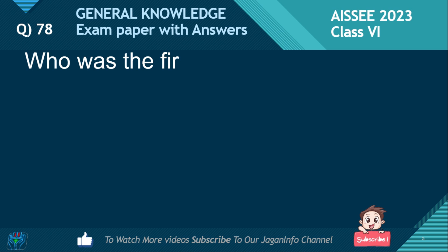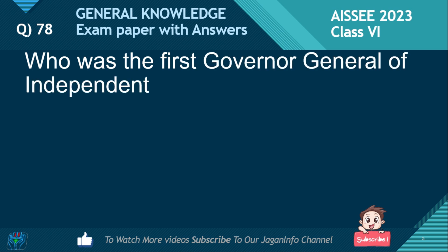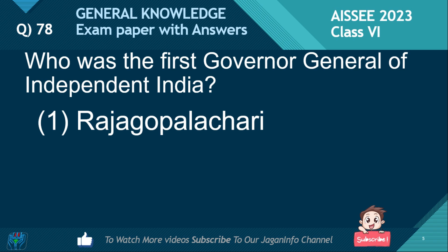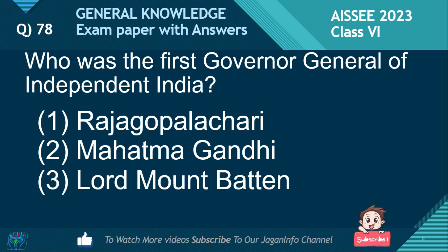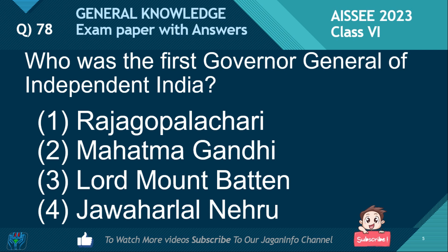Who was the first Governor General of Independent India? Options: Rajagopalachari, Mahatma Gandhi, Lord Mountbatten, Jawaharlal Nehru. If you know the answer, please put the comment below. The answer is Chakravarti Rajagopalachari.